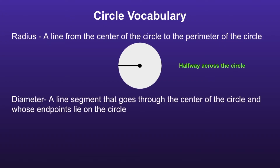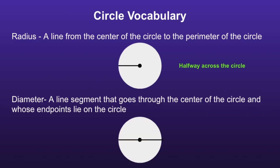Diameter: a diameter is a line segment that goes through the center of the circle and whose endpoints lie on the circle. So it will be a line segment that goes all the way across the circle. And the diameter is always twice as big as the radius — the radius goes halfway across, and the diameter goes all the way across.